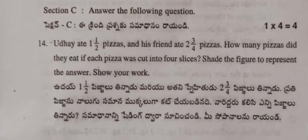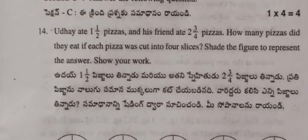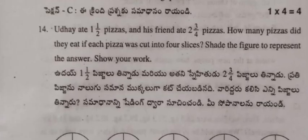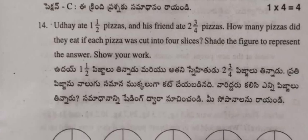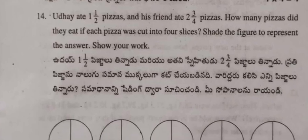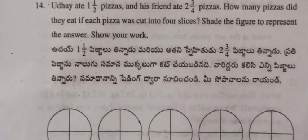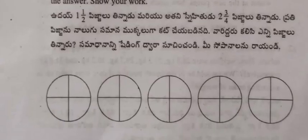Section C: Answer the following questions (1 × 4 = 4 marks). Udai ate 1 and 1/2 pizzas and his friend ate 2 and 3/4 pizzas. How many pizzas did they eat in total? If each pizza was cut into 4 slices, draw a figure to represent the answer. Show your work.